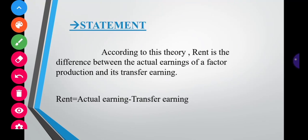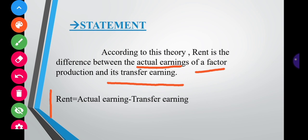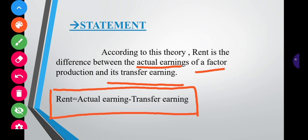Next, the statement of the theory. According to this theory, rent is the difference between the actual earnings of a factor and its transfer earnings. Transfer earnings means the minimum payment that has to be made to a particular factor of production.